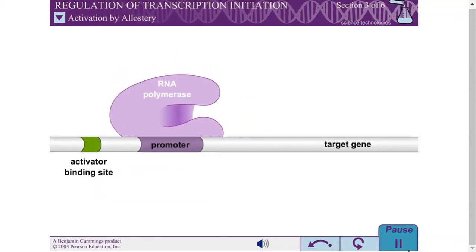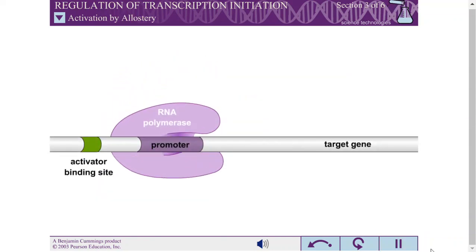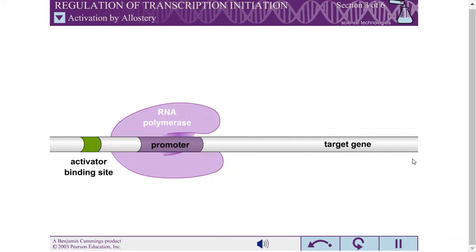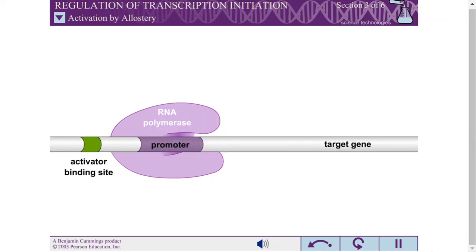Not all promoters are activated in the same way. Sometimes, RNA polymerase is able to bind to the promoter efficiently, but the RNA polymerase promoter complex isn't able to efficiently convert to the open complex to initiate transcription.